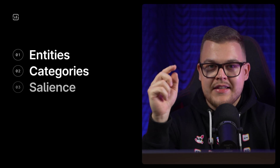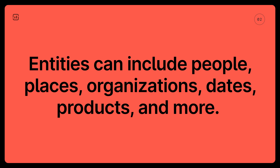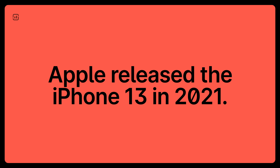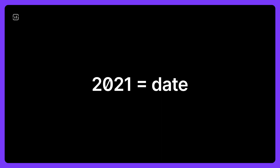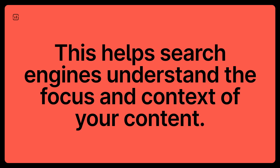To optimize your content, you need to understand the three components of NLP: Entities, Categories, and Salience. Entities refer to specific objects or concepts recognized and extracted from the text. These can include people, places, organizations, dates, products, and much more. For example, in the sentence 'Apple released iPhone 13 in 2021,' Apple is an entity recognized as a company, iPhone 13 as a product, and 2021 as a date. Optimizing for entities means ensuring that your content clearly mentions and provides relevant information about key aspects of your topic. This helps search engines understand the focus and context of your content, improving its chances of ranking for related queries.